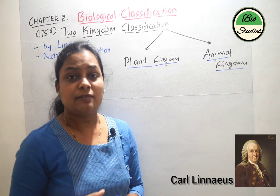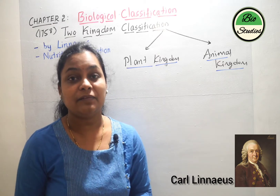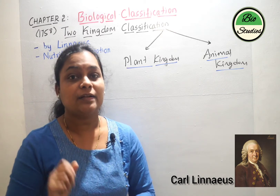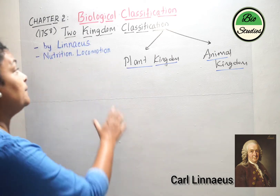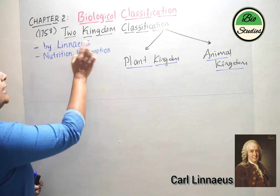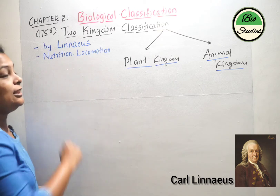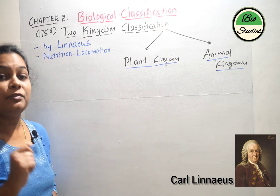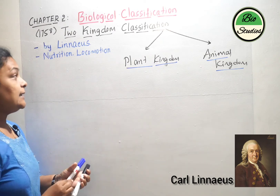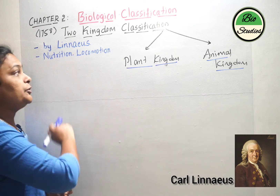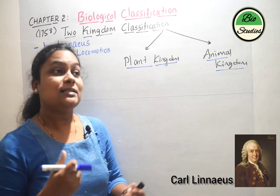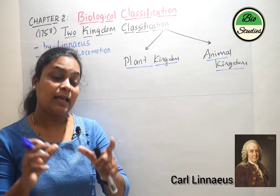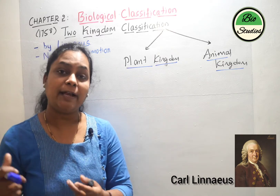What is the difference between Aristotle's and Linnaeus's classification? Aristotle considered only simple characters in the organisms. But the main two characters considered by Linnaeus were nutrition and locomotion — we have studied the types of nutrition in the previous video. Carolus Linnaeus considered the mode of nutrition and the type of locomotion, sometimes also referred to as mobility. Based on these two characters he classified organisms as plants or animals.